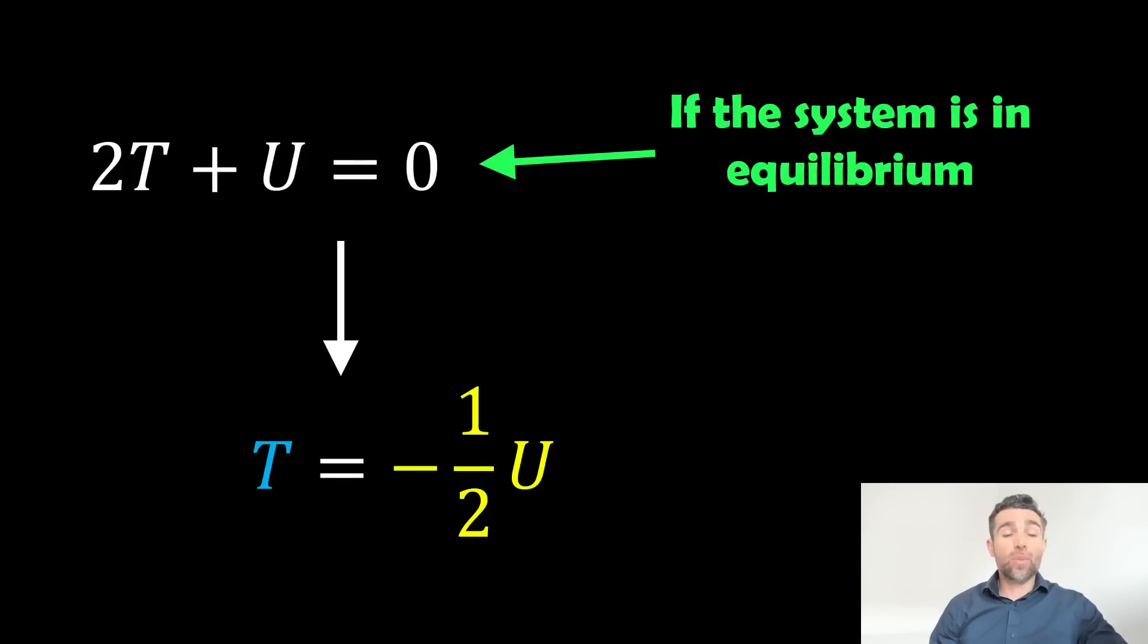Now, if it's in equilibrium, then basically two times the kinetic energy plus the potential energy will equal zero. Well, that means we can also write it in the form down below there. So your kinetic energy T is equal to minus a half times the gravitational potential energy U. So we can write it in a few forms there basically. But this is making the assumption that it's in equilibrium. We've got our total kinetic energy and our gravitational potential energy of the system as well.